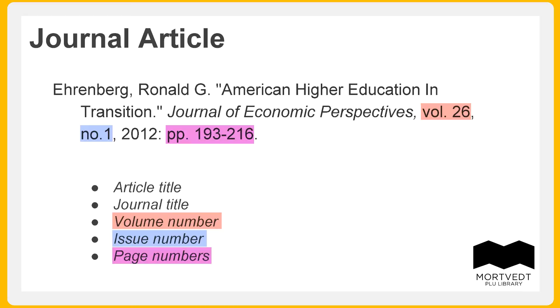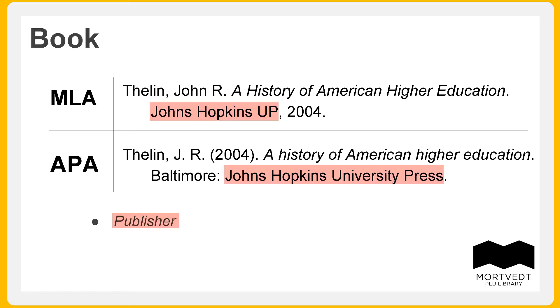To determine if a citation is for a book, look for the name of the publisher. Depending on the citation style — MLA or APA — you may also see the city where the book was published.